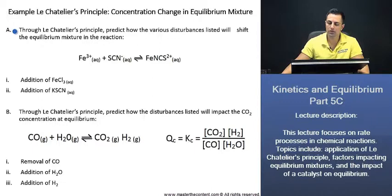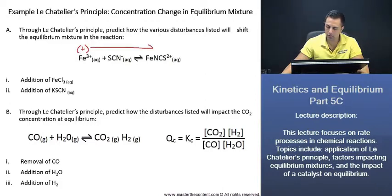Through Le Chatelier's principle, predict how various disturbances listed will shift the equilibrium mixture in the reaction. The addition here of aqueous iron trichloride will increase the reactants. And if we have an increase in reactant, then the reaction will shift to the right and we'll have product formation.